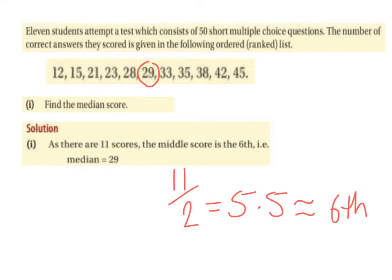Another way to work this out: the median means halfway through the list, so we divide by 2. There are 11 students, so 11 divided by 2 is 5.5, and since we have a decimal, we always round up. So we're looking for the 6th value.